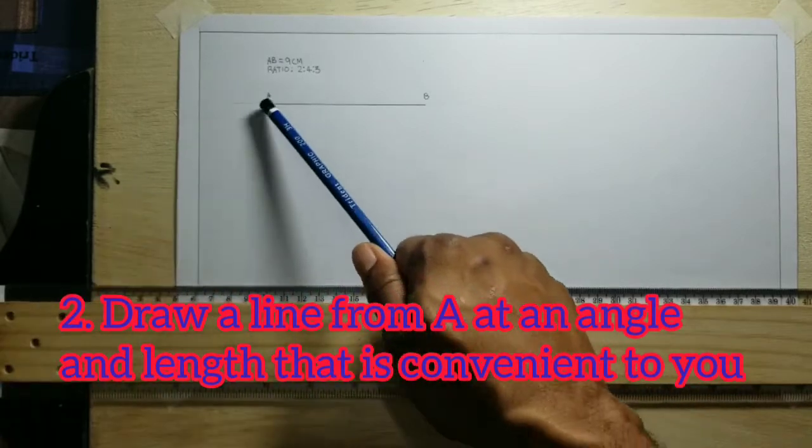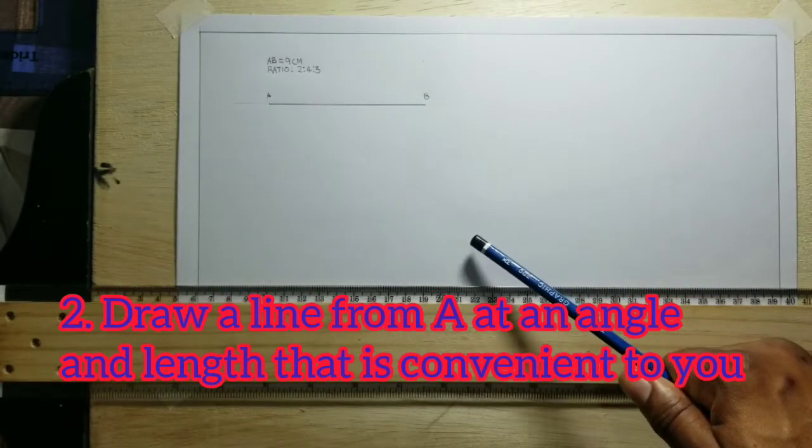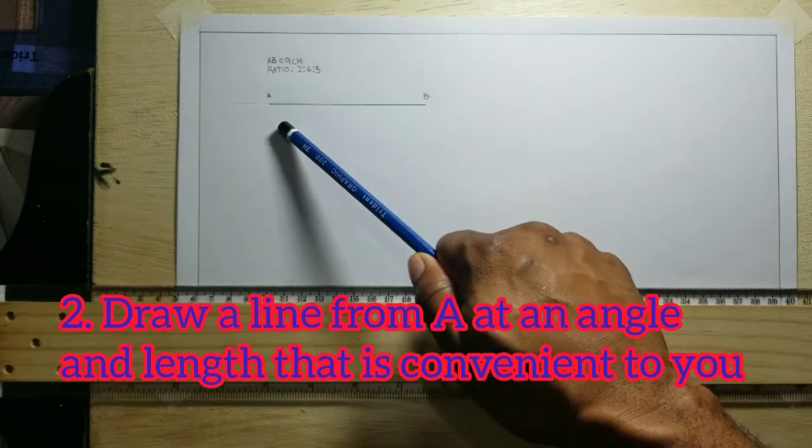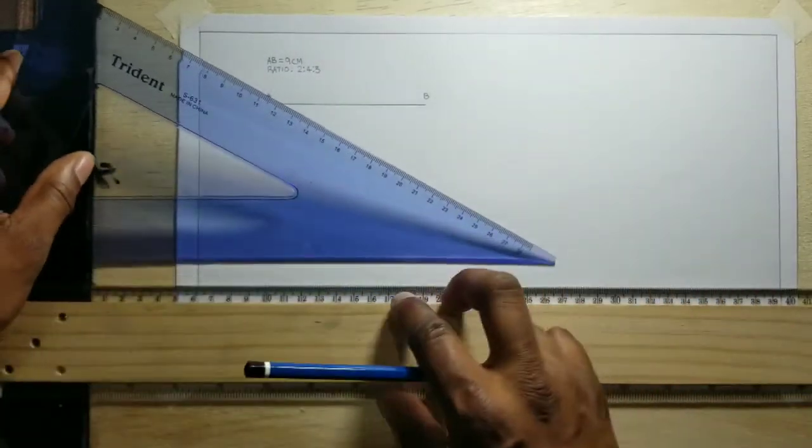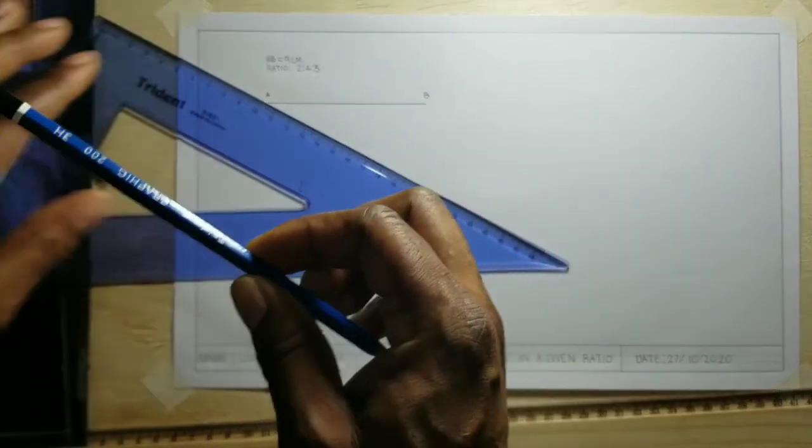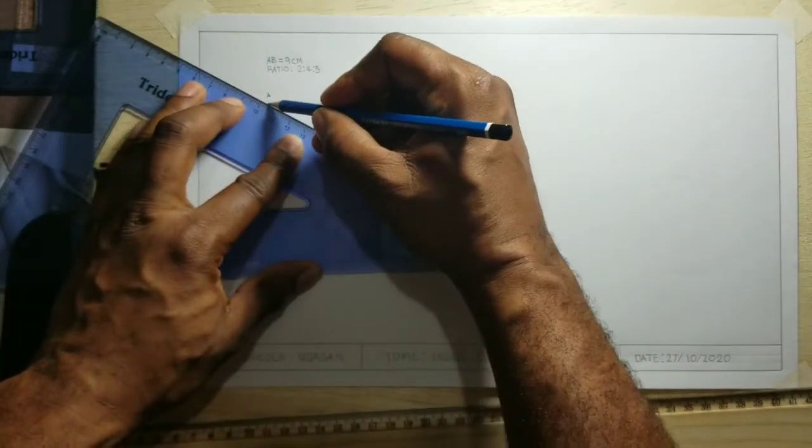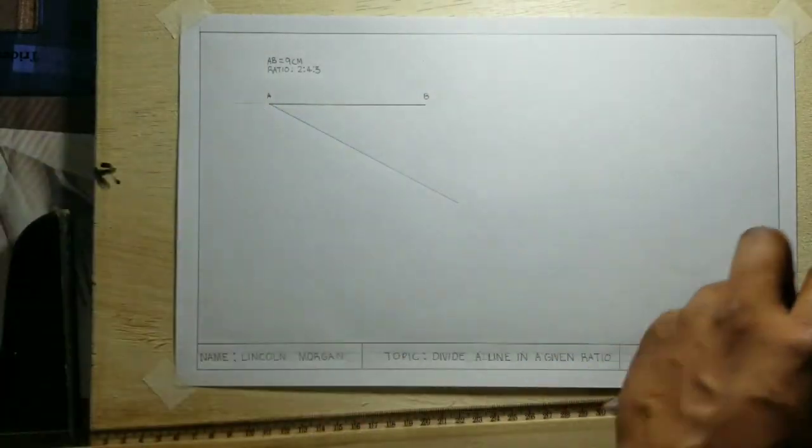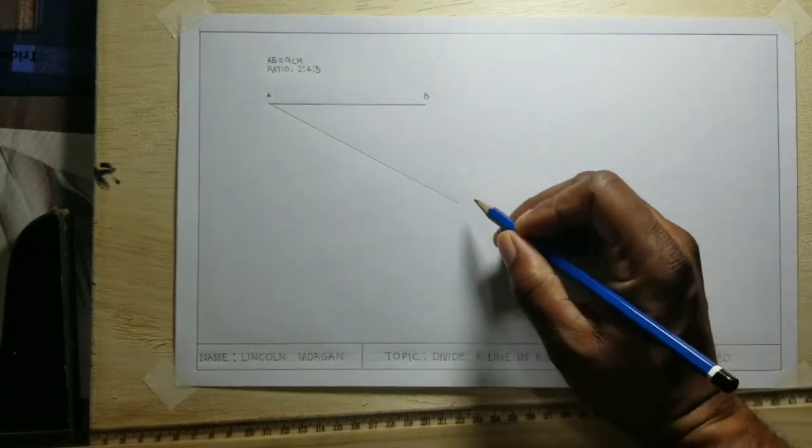Now, what we will do is draw a line from point A at an angle that is convenient to us. You're not going to measure the angle, you're just going to draw a line, an acute angle, that is convenient to you. We will label this point Z.